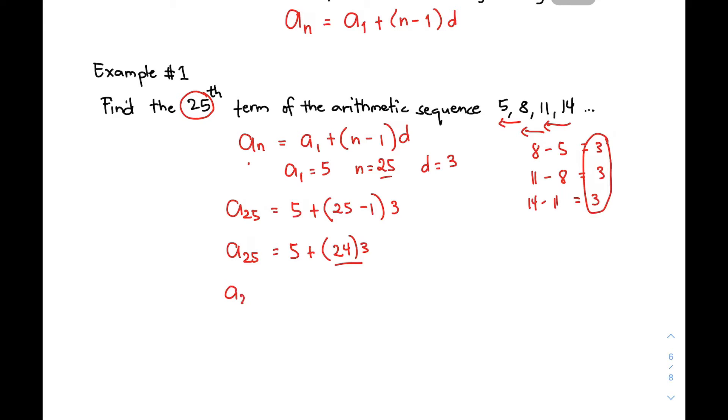That will give you 5 + 72. And then, simplifying that one, your 25th term is equal to 77. This is the 25th term of the given sequence 5, 8, 11, and 14.